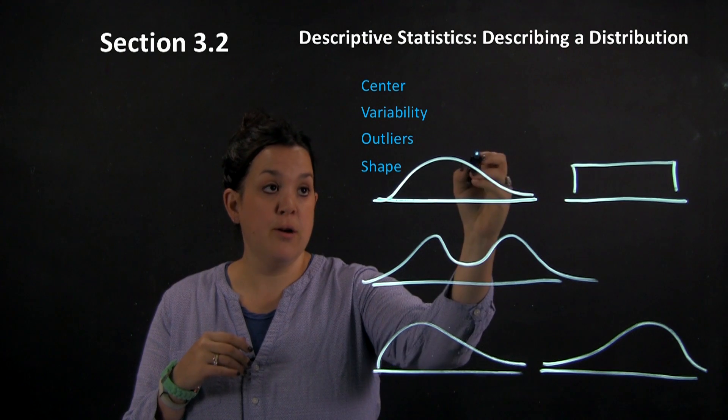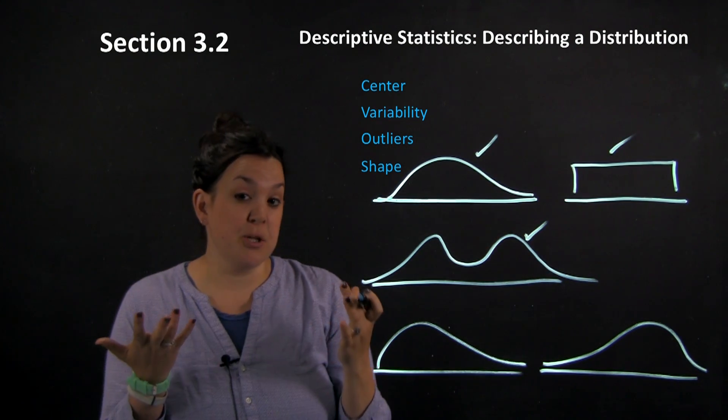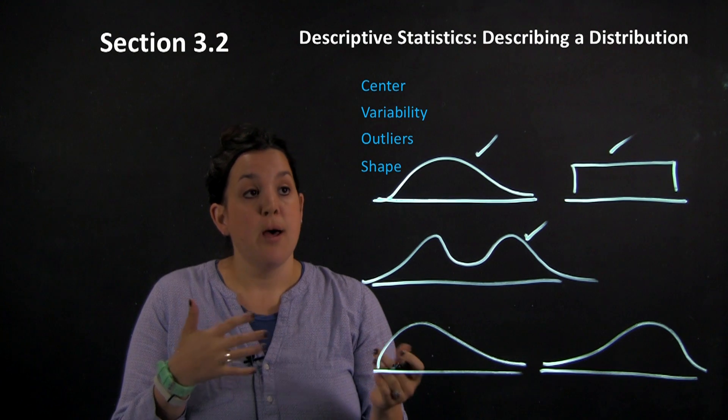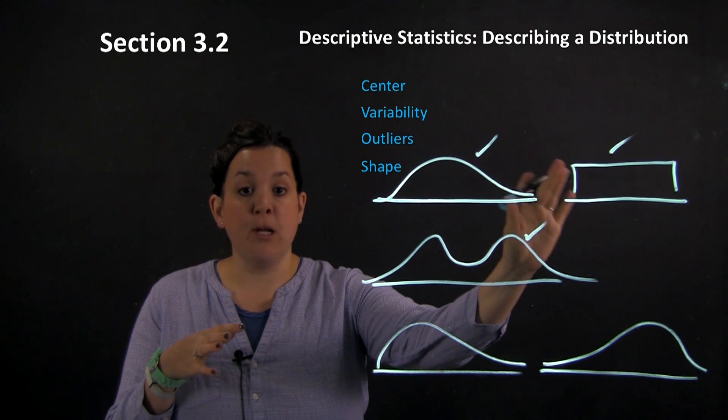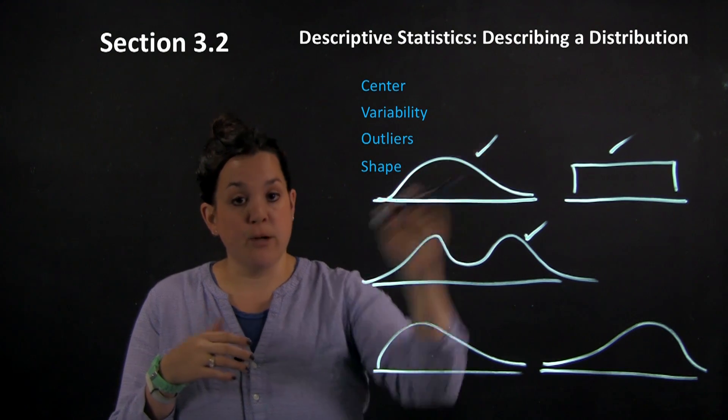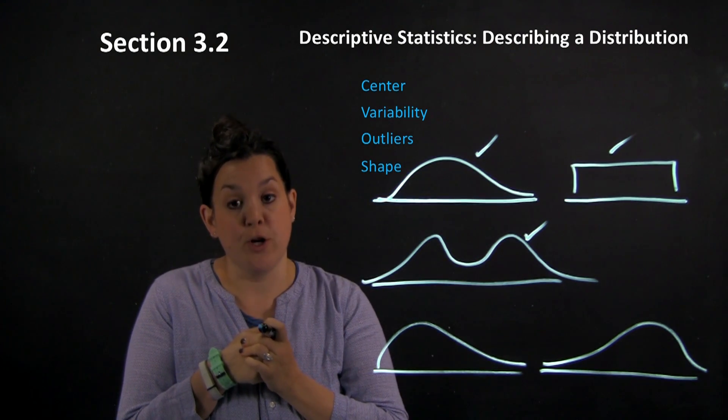This graph here, this graph here, and this graph here would all actually be described as symmetric, because when you look at it you could split it in the middle and there would be an equal amount on both the left and right hand side. So all of them are described as being symmetric.